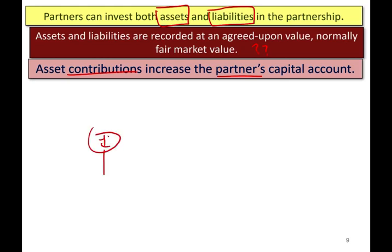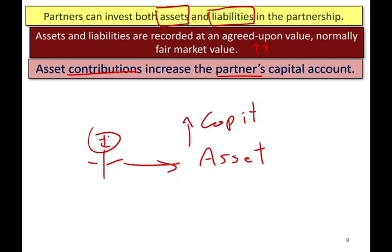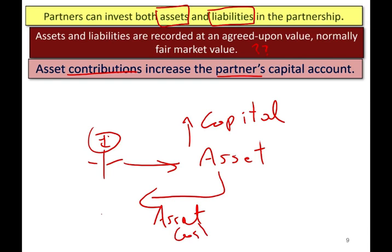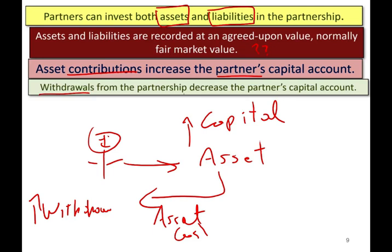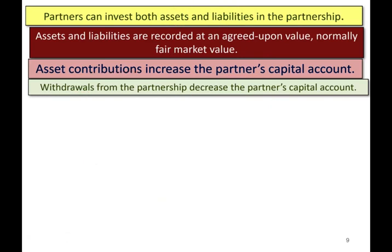Every time a partner contributes an asset — gives an asset to the company — their capital account goes up. And when the partnership gives an asset back, usually cash, to the partner, their withdrawal account goes up, because when you withdraw money from the company, your capital account simply decreases. So withdrawals decrease the capital account: every time you contribute assets, your capital goes up; every time you take assets away, your capital goes down.